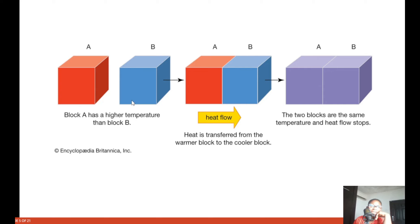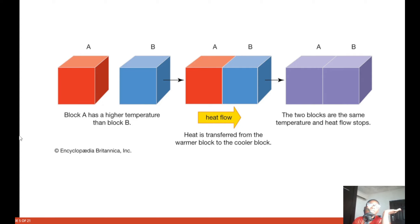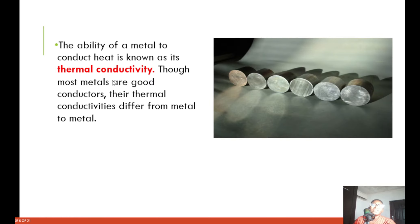Block A has a higher temperature than Block B — you can see how red it is. Heat transferred from the warmer block to the cooler block. Later there is a balance of temperature: the two blocks reach the same temperature and heat flow stops. That is the process of conduction.